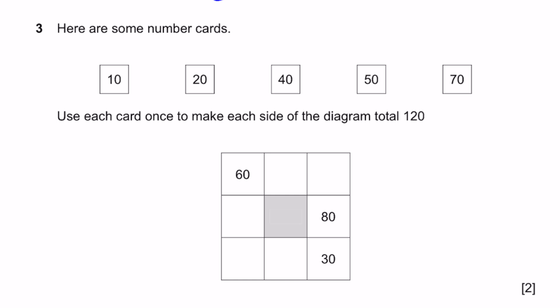Question 3. Here are some number cards. Use each card once to make each side of the diagram total 120. So 80 plus 30 plus 10 is 120. 60 plus 10 plus 50 is 120. Now we've cancelled out 2 of the cards. 120 minus 30 equals 90, so these 2 should add up to 90. And 120 minus 60 equals 60, so these 2 must add up to 60. The only way to do that is to put 70 and 20 here, and 40 over there. That's the answer.